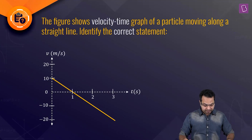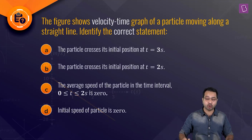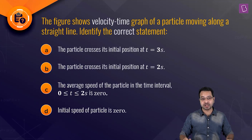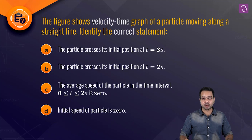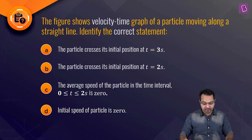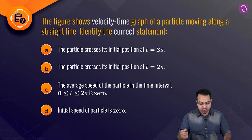The question: the figure shows a velocity-time graph of a particle moving along a straight line. Identify the correct statement. The options are: the particle crosses its initial position at t = 3 seconds; the particle crosses its initial position at t = 2 seconds; the average speed of the particle in the time interval 0 to 2 seconds is 0; and the initial speed of the particle is 0.